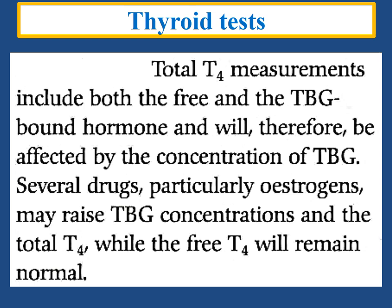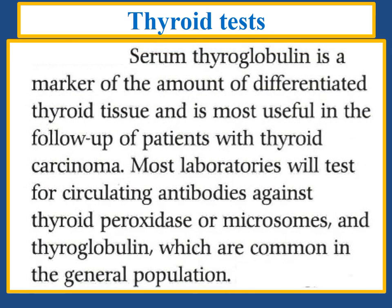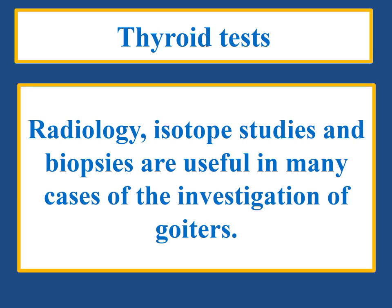Thyroid tests include total T measurements, which include both the free and TBG-bound hormone and will therefore be affected by TBG concentration. Several drugs, particularly estrogens, may raise TBG concentrations and total T4, while free T4 will remain normal. Serum thyroglobulin is a marker of the amount of differentiated thyroid tissue and is most useful in the follow-up of patients with thyroid carcinoma. Most laboratories test for circulating antibodies against thyroid peroxidase or microsomes and thyroglobulin, which are common in the general population. Radiology, isotope studies, and biopsies are useful in the investigation of goiters.